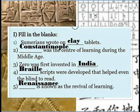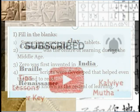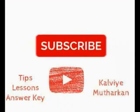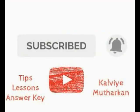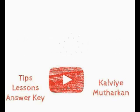Fill in the blanks: Sumerians wrote on clay tablets. Constantinople was the center of learning during the Middle Ages. Zero was first invented in India. Braille scripts were developed to help even the blind to read. The Renaissance is known as the revival of learning.